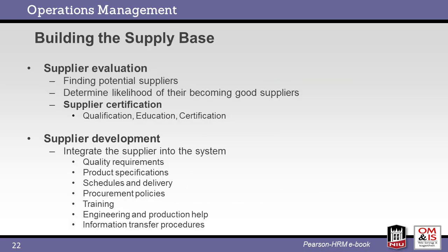A company can strengthen their pool of suppliers first by selecting the best suppliers. This may include supplier certification where the company verifies the qualifications of the supplier. Many companies also engage in supplier development. The goal is to work with the supplier to fill any gaps and bring the supplier into better alignment with the overall supply chain. Examples of this supplier development partnership are listed here.